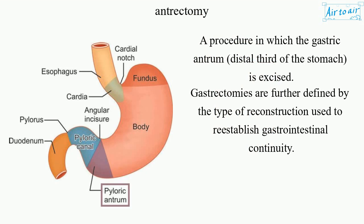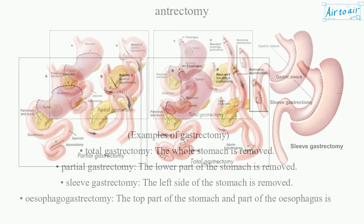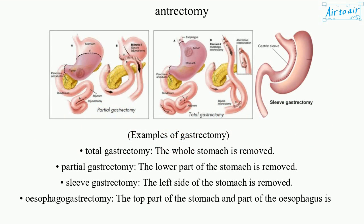Gastrectomies are further defined by the type of reconstruction used to reestablish gastrointestinal continuity. Examples of gastrectomy: total gastrectomy — the whole stomach is removed; partial gastrectomy — the lower part of the stomach is removed; sleeve gastrectomy — the left side of the stomach is removed; esophagogastrectomy — the top part of the stomach and part of the esophagus is removed.